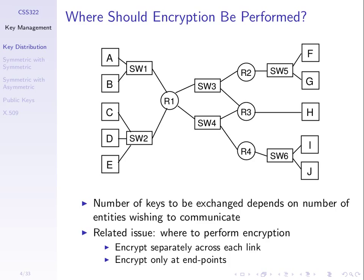The other approach is end-to-end encryption, or host-level encryption. If A wants to send to B, A encrypts the data, sends the ciphertext to the switch, the switch does not decrypt — it simply forwards the ciphertext to B, and B receives and does the decryption. Or if A wants to send to F, A encrypts, sends to the switch, which forwards it along the path to switch 5, and only F is the one that can decrypt. That's end-to-end encryption.